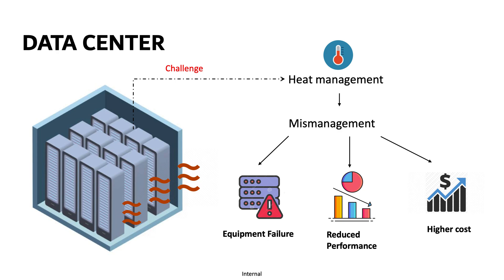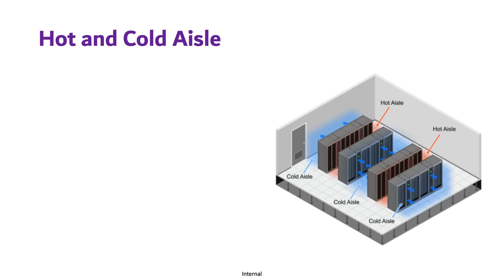To address this, data centers use a design strategy called hot and cold aisle containment. The hot and cold aisle data center layout was originated by IBM in 1992 and is one of the oldest ways to save energy in the data center. The purpose of hot and cold aisle is to manage airflow and cooling efficiency, consequently lowering the energy, cooling, and management costs inside data centers.